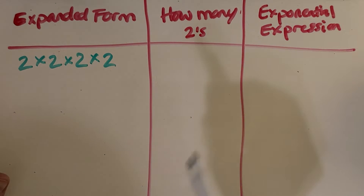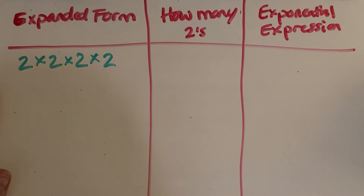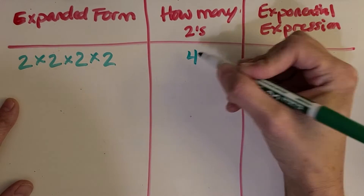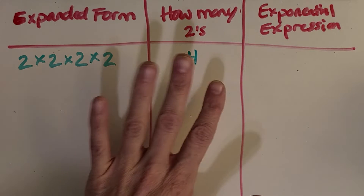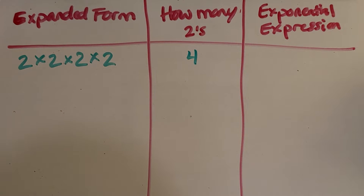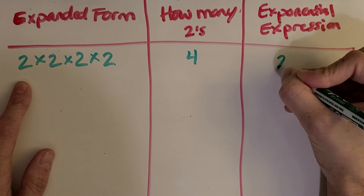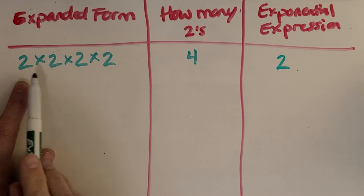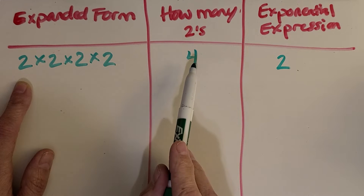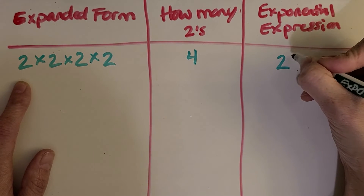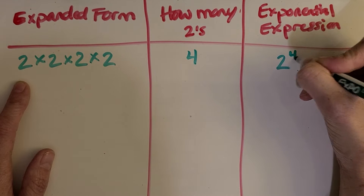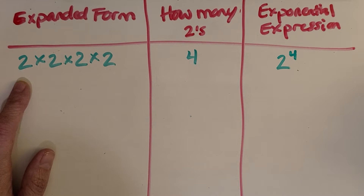And then we can think about how many 2s there are — 4. And then how would I write it with an exponent knowing those two things? You know that the base needs to be 2 because that's the number we're working with, and the exponent is going to be how many times they're multiplied. So it's going to be 2 with an exponent of 4.